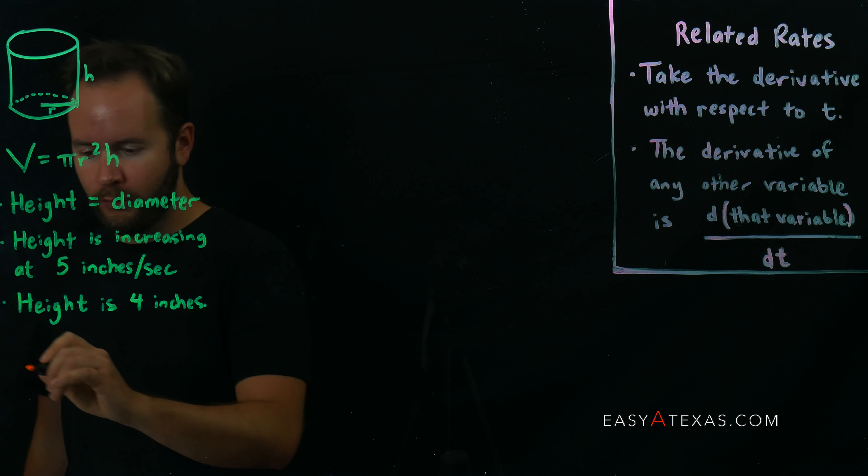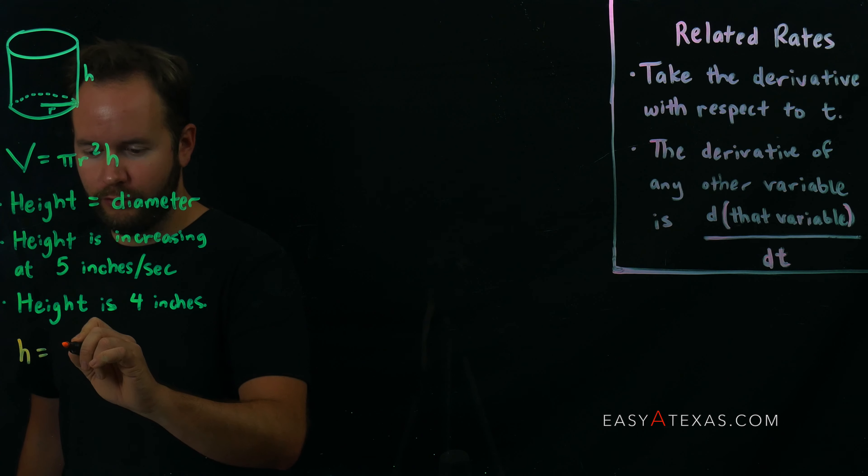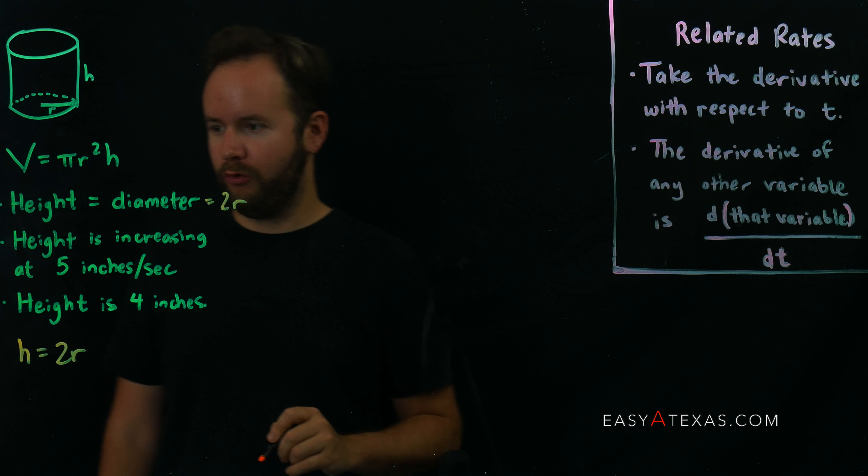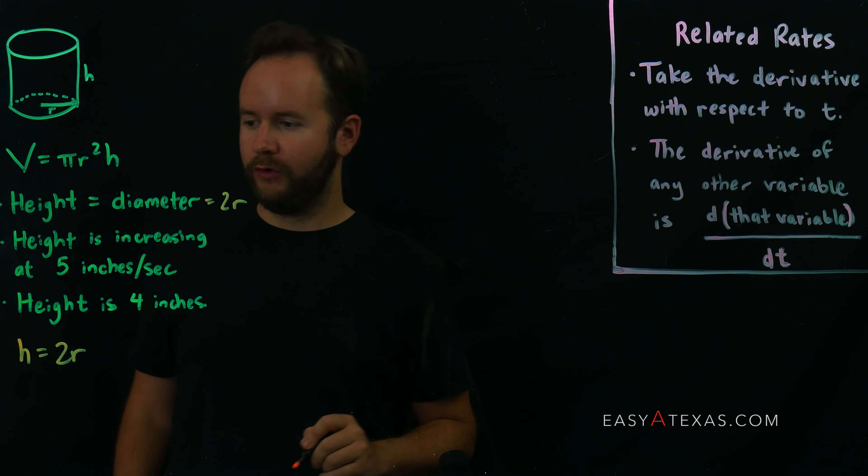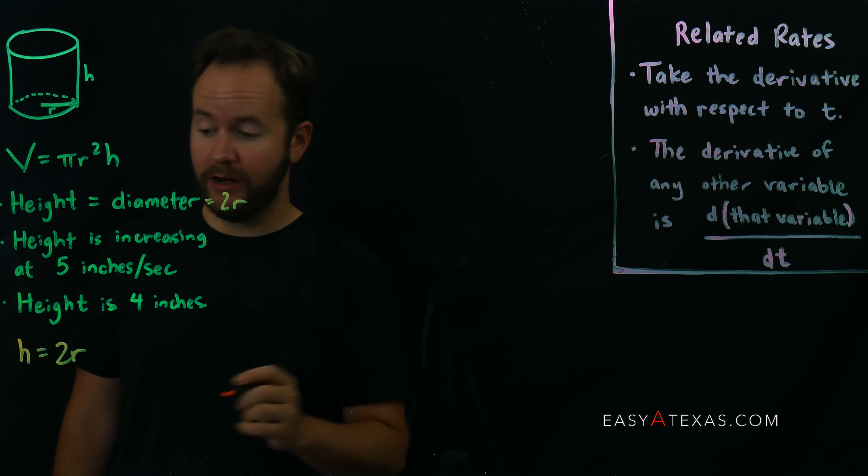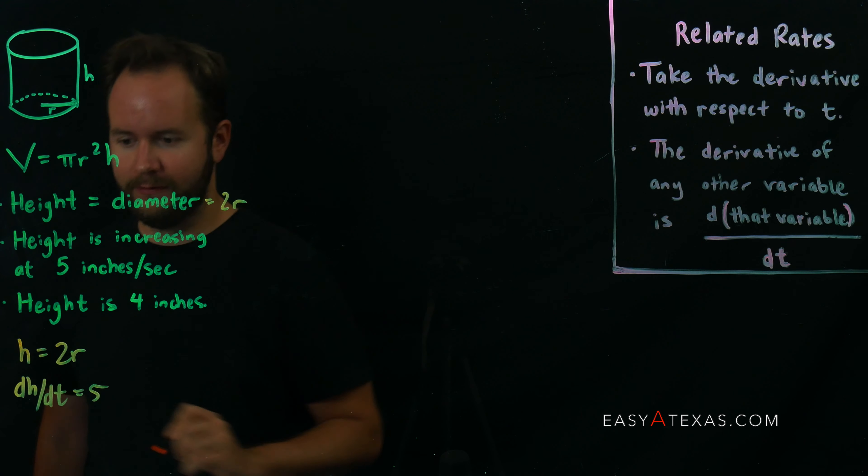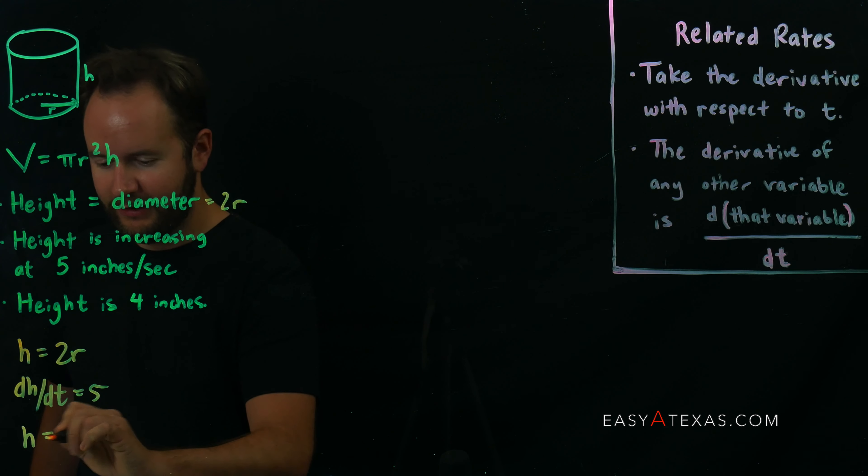So for starters, we're going to say h is equal to the diameter. But since the diameter is twice the radius, we're going to say height is equal to twice the radius, 2r. Height is increasing at 5 inches per second. In calculus terms, that is dh/dt equals 5. And then we're told the height equals 4.